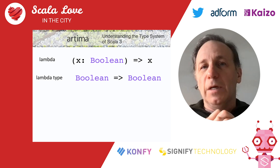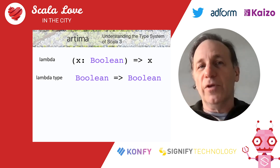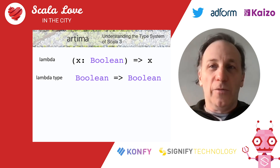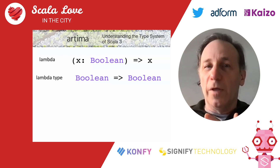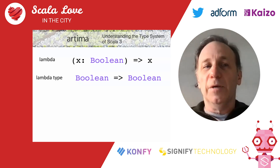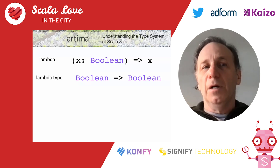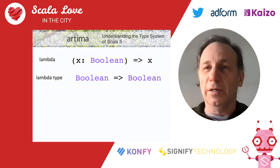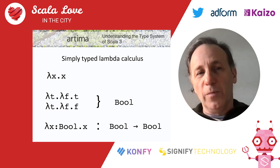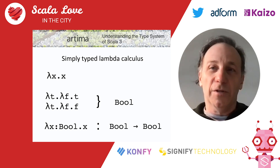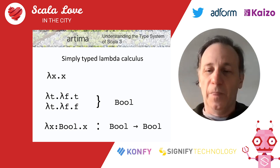When you create a lambda, you just invent a variable name and use it on the right-hand side. That first line is a function literal. When you run it, you get a function value at runtime, and at compile time there is a type — an arrow type — just like in simply typed lambda calculus. One difference in Scala is you can have multiple parameters in functions, whereas in simply typed lambda calculus you use currying — lambda t, lambda f — you think of that as a function that takes two things.